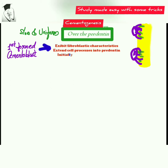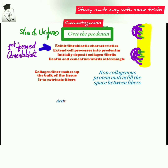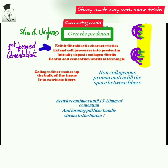The acellular cementum is slowly and uniformly formed over the predentine. The first-formed cementoblasts exhibit fibroblastic characteristics — they extend their cell processes into the predentine and initially deposit collagen fibrils, with dentinal and cementum fibrils intermingling. In the cementum matrix, the collagen fibers make up the bulk of the tissue and lie perpendicular to the extrinsic fibers or root surface. Cells on the root surface migrate away but continue depositing collagen so that fine bundles lengthen and thicken, while non-collagenous protein matrix fills the spaces between the fibers.